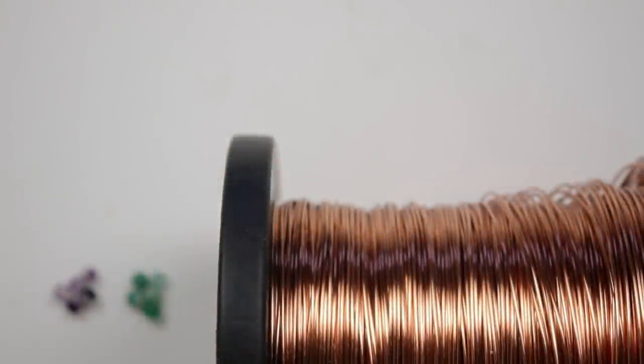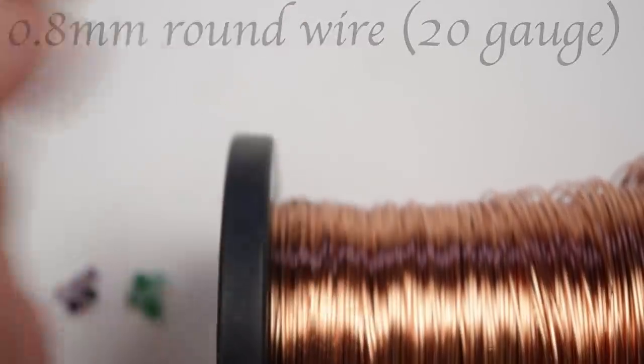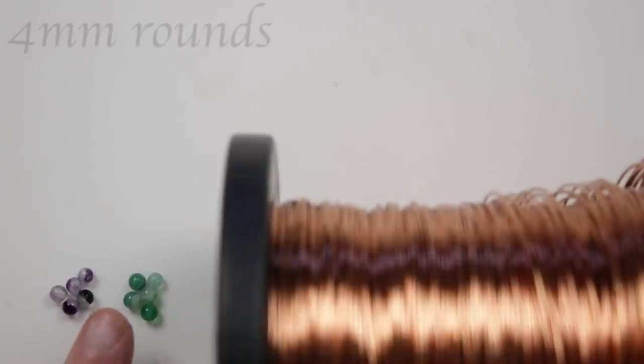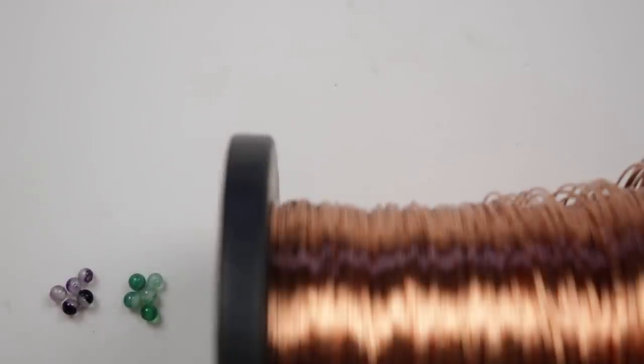These are the materials that we're going to need. First, the wire I'm using here is 0.8mm regular round copper wire, and for the beads I'm using these 4mm rounds - two different colors of agate gemstone beads. You can choose your beads and colors however you want, and like always you'll find the materials and helpful links in the description box down below.